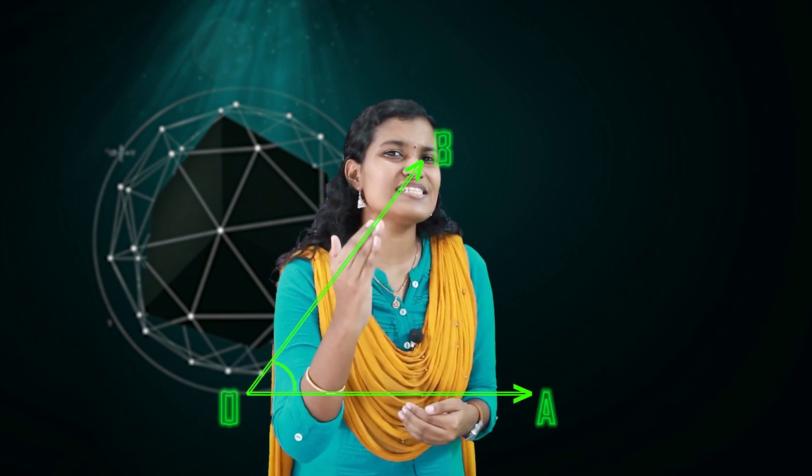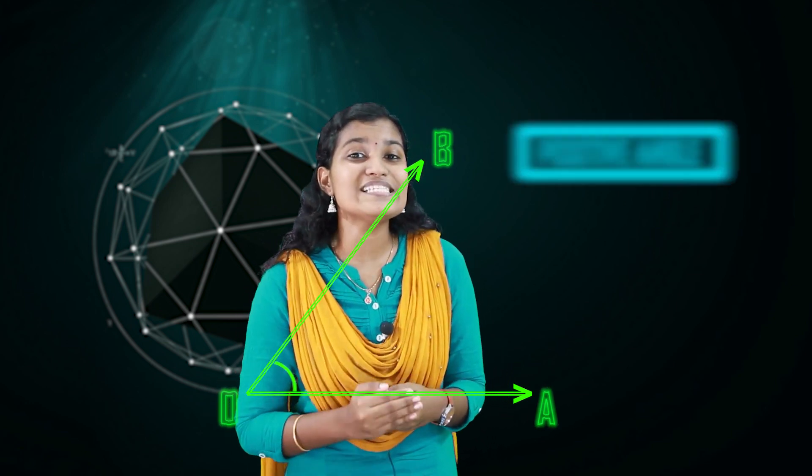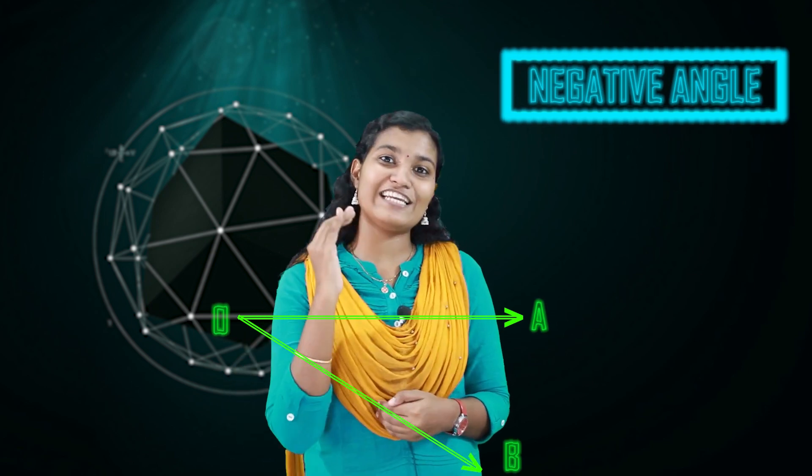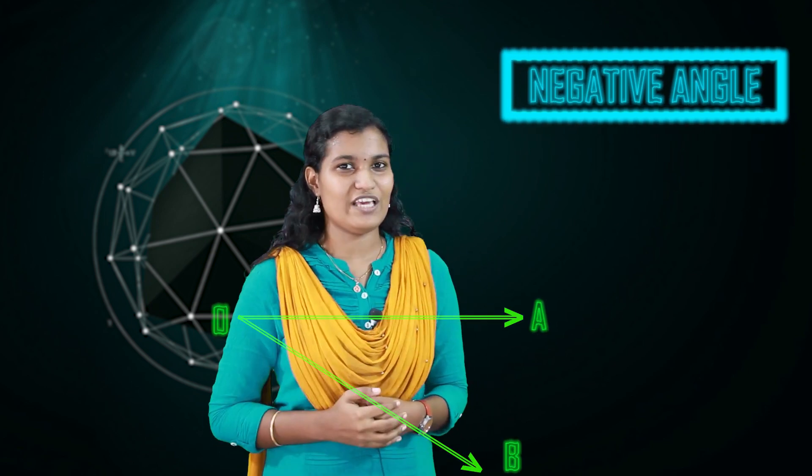Now, regarding the direction of rotation: if the rotation is in the anti-clockwise direction, we call this a positive angle. If the rotation is in the clockwise direction — where OA is rotated to OB in the clockwise direction — we call this a negative angle. So anti-clockwise rotation gives a positive angle and clockwise rotation gives a negative angle.